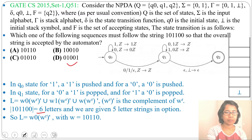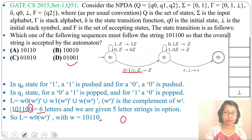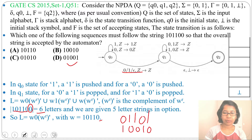W will be 1, 0, 1, 1 — the first four characters, excluding the separating 0. Wait — W is 1, 0, 1, 1, 0 except the last 0, which we skip. The reverse of W is 0, 1, 1, 0, 1. The complement of that reverse is 1, 0, 0, 1, 0.